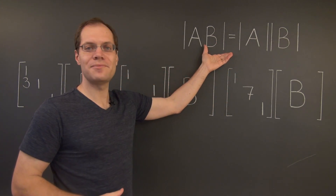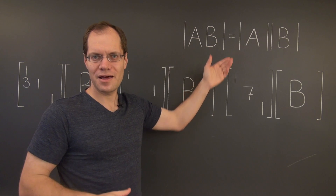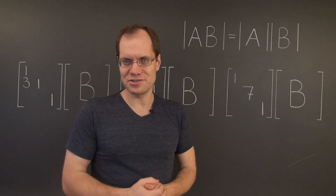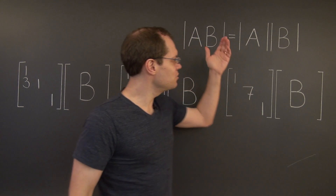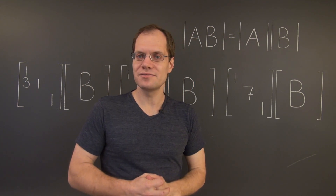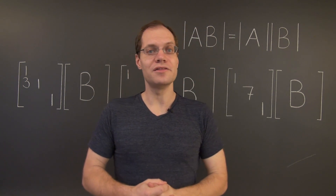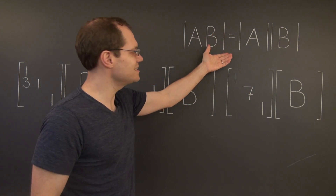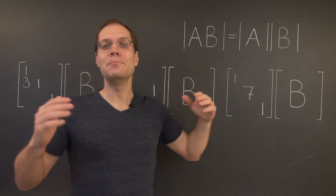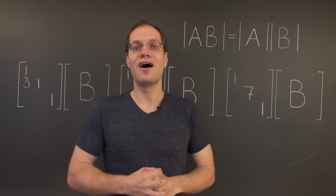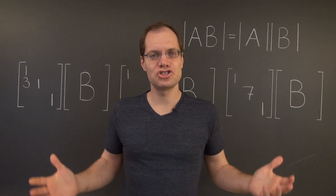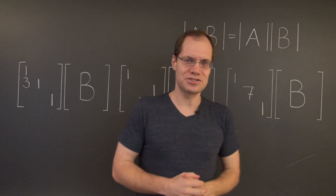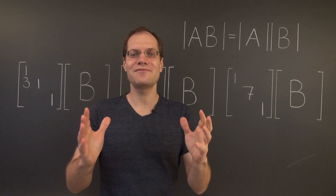In this video, we will prove this amazing and amazingly important property in the special case when A is an elementary matrix. Then in the next video, we will make the jump to arbitrary matrices. In an earlier video, we used this property in combination with elementary matrices to rediscover the effect of row operations on the determinant. So now it's time to go back to where we were logically previously. This identity is not yet available and is to be proved. Meanwhile, we know all about the effect of row operations on the determinant. So let us now show, or rather simply observe, that this identity holds when A is each kind of elementary matrix. It's really all right in front of us. We just have to say it.